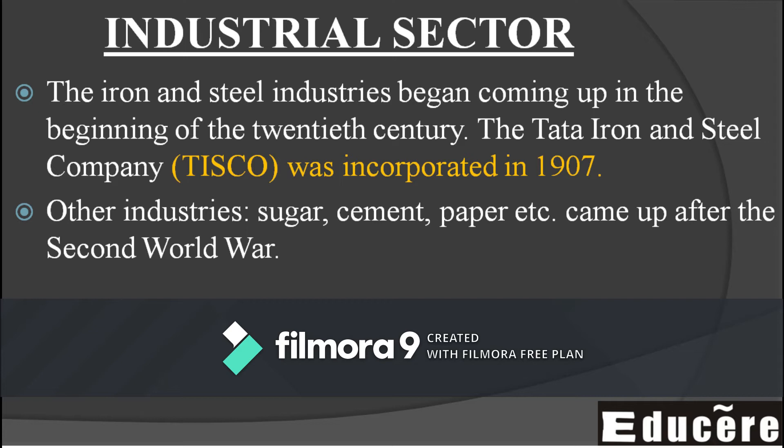Other industries were also developed apart from steel. There were sugar industries, which were mainly concentrated in Uttar Pradesh and Maharashtra. Then cement industries came up, mainly in Madhya Pradesh. The paper industry also came up. So these were some industries that started after 1945 — basically developed towards the first half of the 20th century — which you can mention while writing answers.